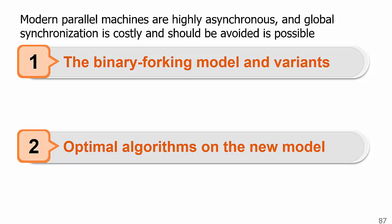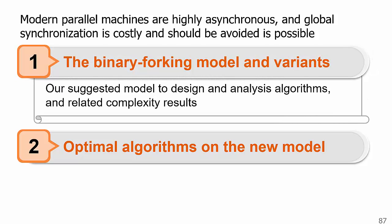Finally, let's have a short wrap-up. Modern parallel machines are highly asynchronous, meaning that global synchronization is costly and should be avoided if possible. To capture that, we revisited the existing multi-threaded models, gave out our suggestions, which is the binary forking model, and explained the decisions. Formalizing the model can be helpful in guaranteeing correctness when applying scheduling theorems and comparing different algorithms.